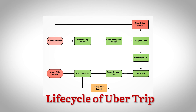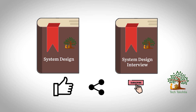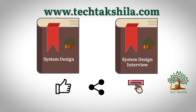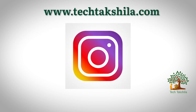To wrap up, this video walked through how a rider books a ride and how driver location is used to facilitate pre-trip, on-trip, and post-trip processes in a ride-hailing application like Uber. Uber does much more — such as surge pricing and automated driver-rider matching — but we kept this video short and beginner-friendly. If you're interested in those extended topics, let us know in the comments. Thanks for watching — designing Instagram is coming up next.